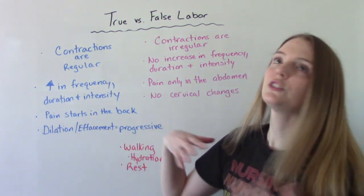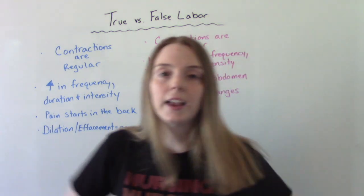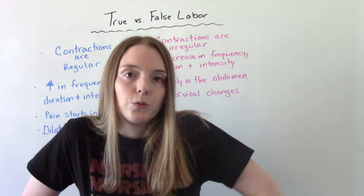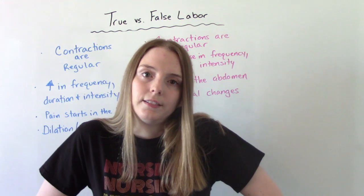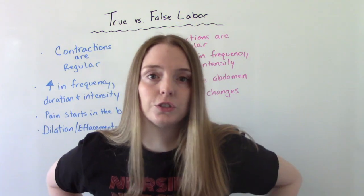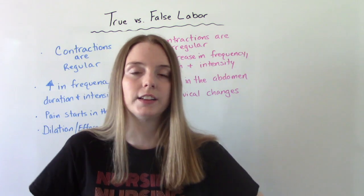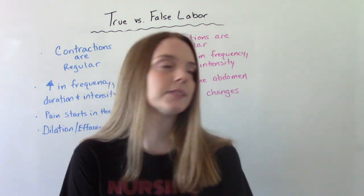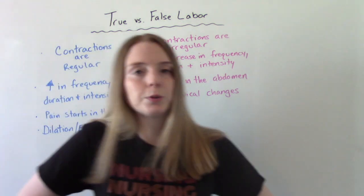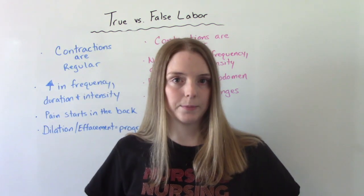Regarding pain: in true labor the pain will usually originate in the back and then radiate to the abdomen. The woman in labor will feel it in her back, her stomach, and she might even feel it in her bottom or her thighs. In false labor it's pretty much all abdomen — it starts in the abdomen and stays in the abdomen.